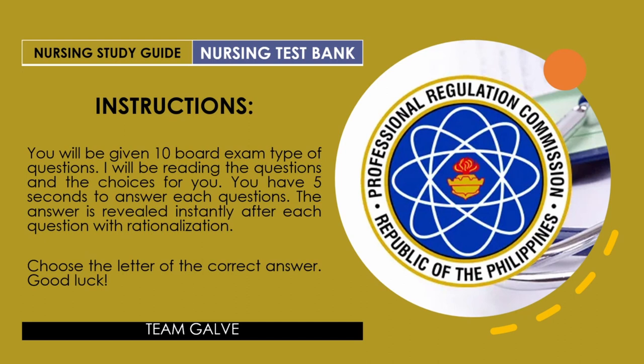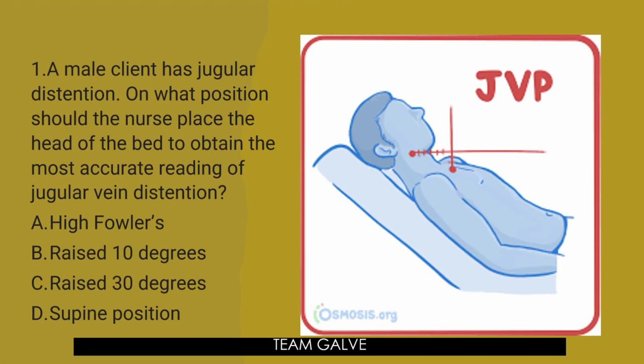Question number one. A male client has jugular distension. On what position should the nurse place the head of the bed to obtain the most accurate reading of jugular vein distension? The question is about client positioning for the jugular vein distension reading. Is it A, high Fowler's? Is it B, raised 10 degrees? Is it C, raised 30 degrees? Or D, supine position?